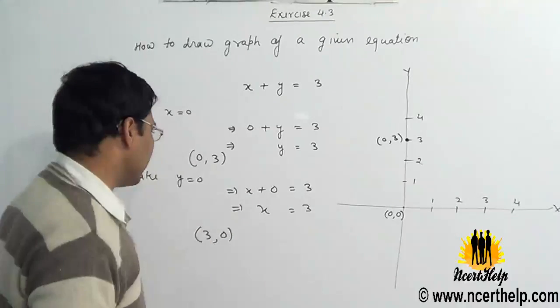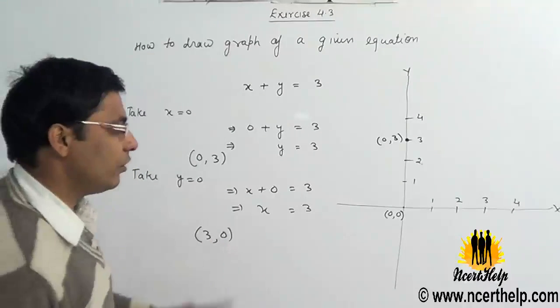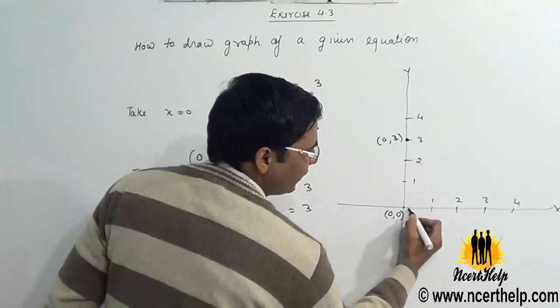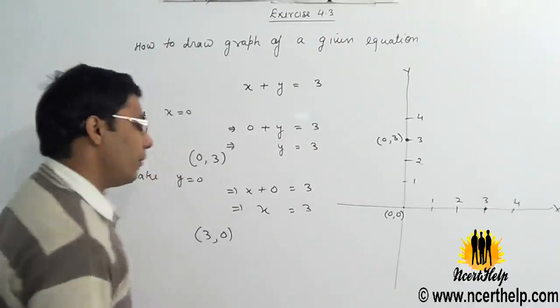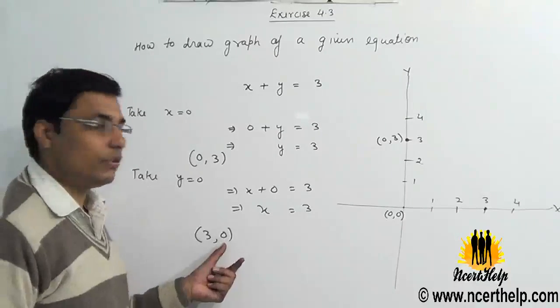Second point is 3 comma 0, so move 3 units on the x-axis because the point is 3 comma 0. 1, 2, 3. This will be 3 comma 0 because y is 0, so no need to move on y-axis.